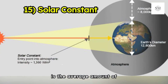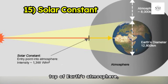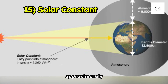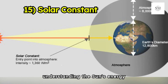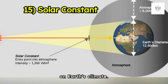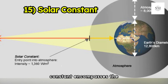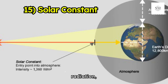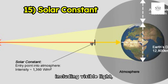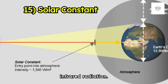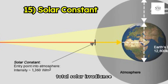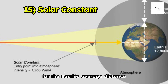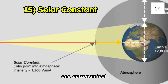The solar constant is the average amount of solar radiation received per unit area at the top of Earth's atmosphere, approximately 1,360 watts per square meter. It is crucial for understanding the Sun's energy output and its effects on Earth's climate. The solar constant encompasses the entire spectrum of solar radiation, including visible light, ultraviolet light, and infrared radiation. It is calculated by averaging the total solar irradiance over time and accounting for the Earth's average distance from the Sun, known as one astronomical unit.